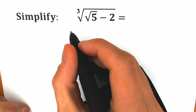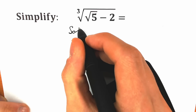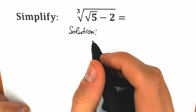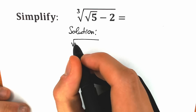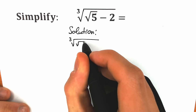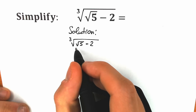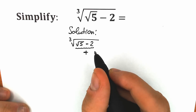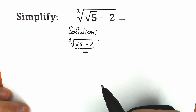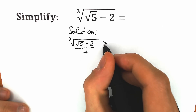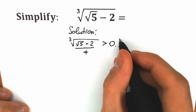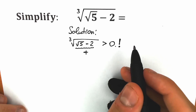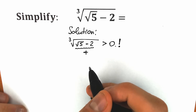Let's start. First, I want to mention one really important moment. When we rewrite our expression — cube root of square root of 5 minus 2 — we are talking about a positive value, because the square root of 5 minus 2 is positive, and the cube root of that positive value is also positive. So we are interested only in positive expressions, and we are going to reject negative values.